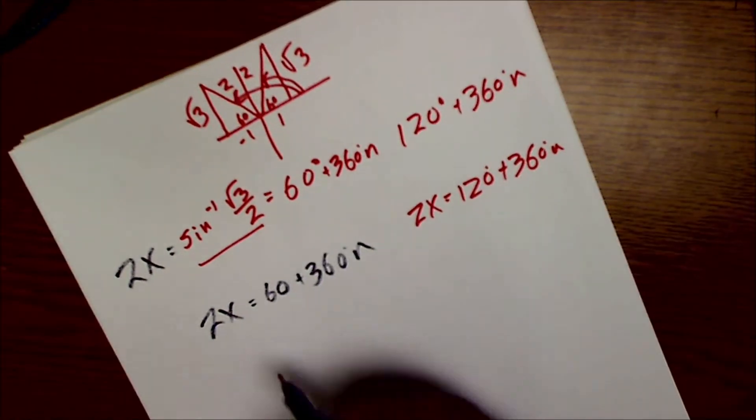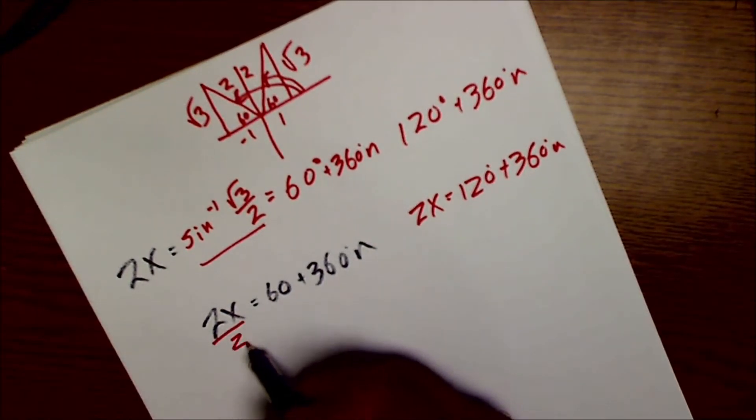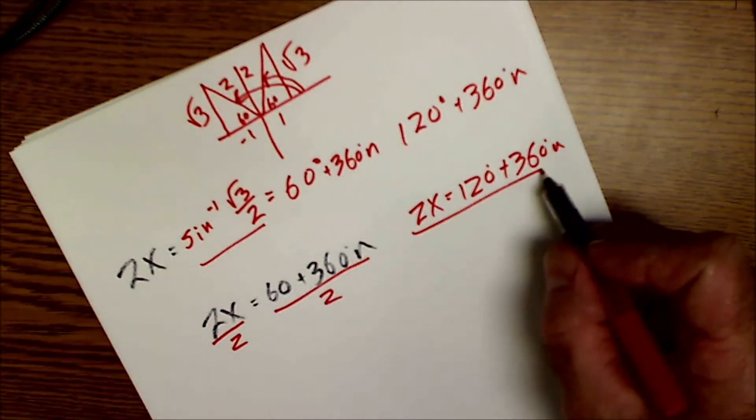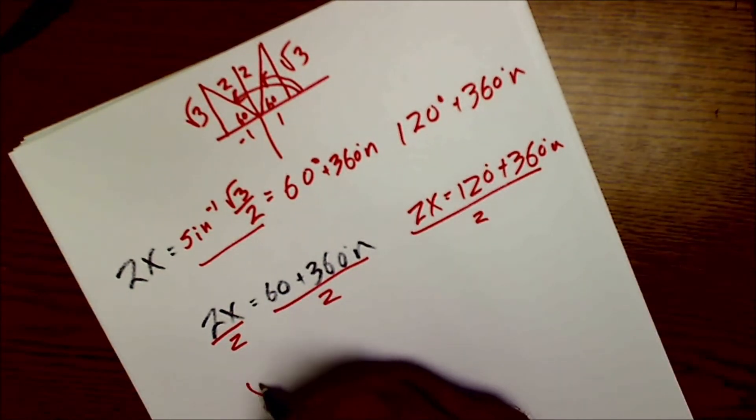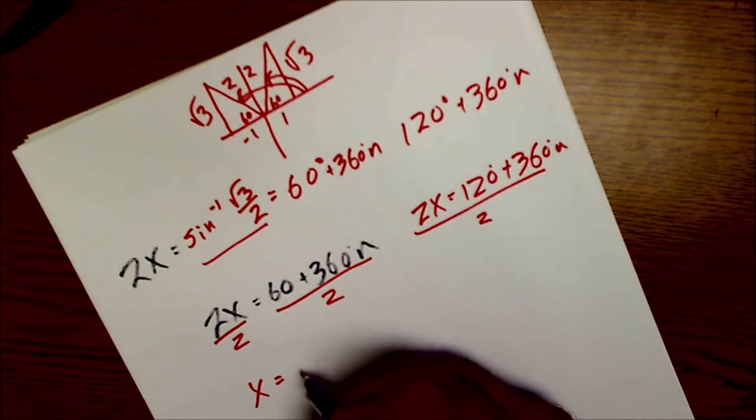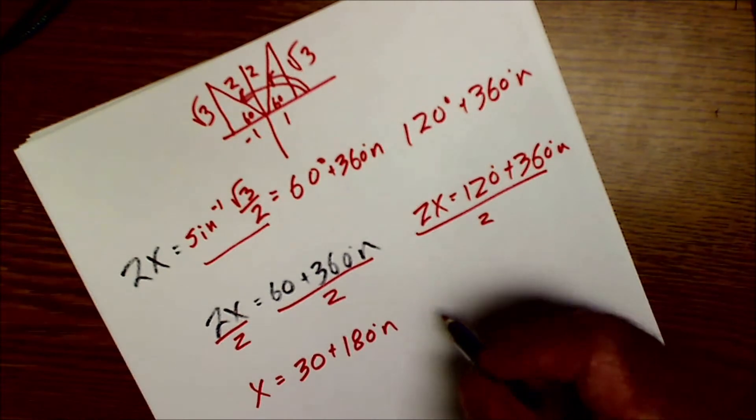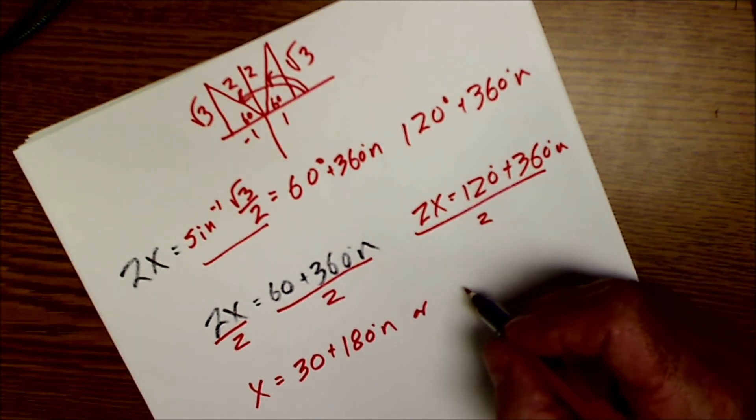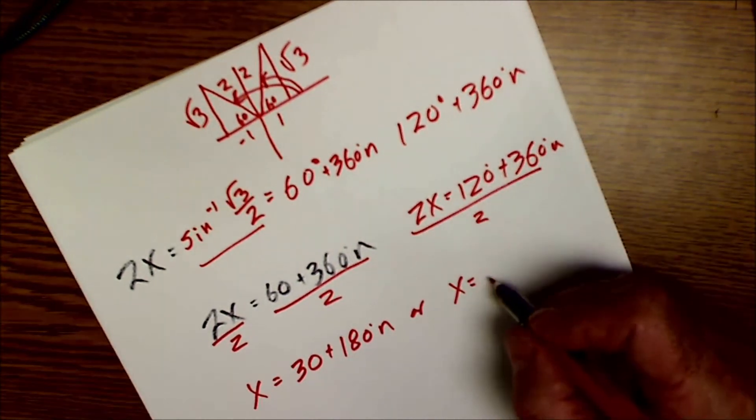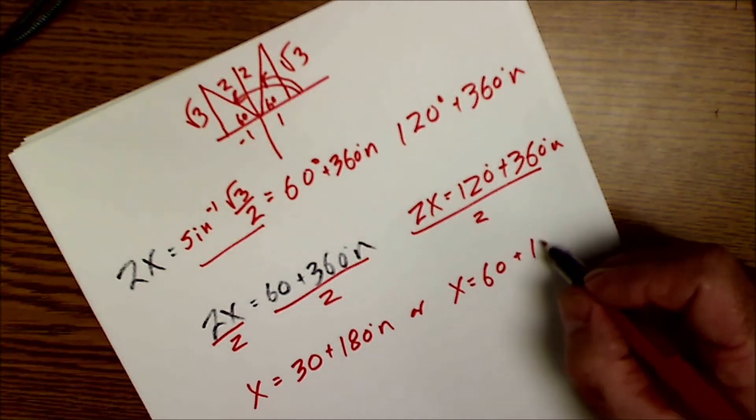So now to get x by itself, I divide both sides by 2. And I can see that x is equal to 60 divided by 2, 30 plus 180 N, or x is equal to 60 plus 180 N.